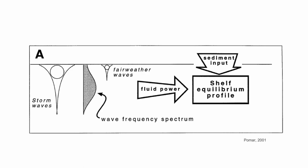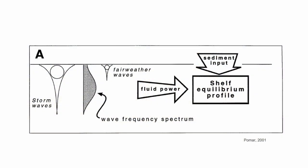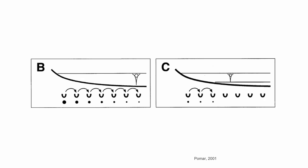This wave energy gives you fluid power. To understand sediments you also have to add the sediment input into the system. The combination of fluid power and the types and amount of sediment gives you a shelf equilibrium profile — in other words, the shelf will reach equilibrium to accommodate both the fluid power and the sediment input. The first step is to understand that a given wave energy has the potential to transport sediments up to a certain grain size.